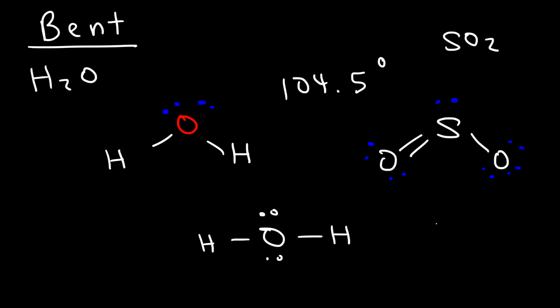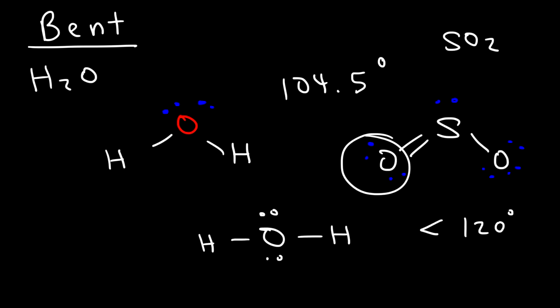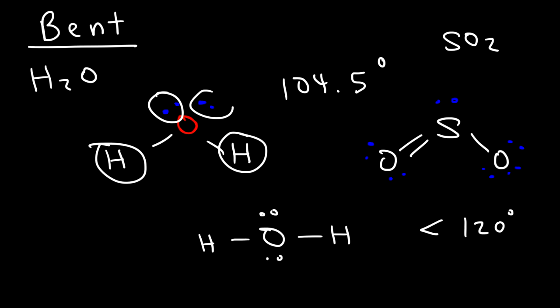SO2 is similar to a trigonal planar structure in that sulfur has two atoms and a lone pair — three things total — so the bond angle is close to 120. Water is similar to a tetrahedral structure: oxygen has four electron groups — two atoms and two lone pairs — so the bond angle is close to the tetrahedral 109.5, but in water it's actually 104.5 degrees.